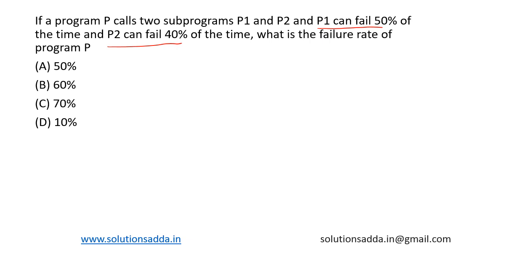Program P fails when either P1 fails or P2 fails. That is, failure of P1 plus failure of P2 is equal to failure of P.